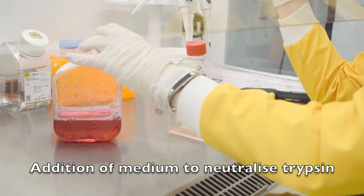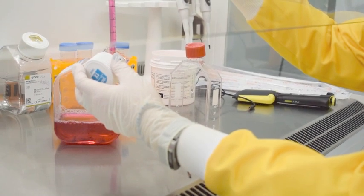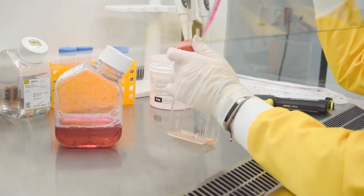A volume of fresh culture medium is added to the cell suspension. This helps neutralize the effects of trypsin, preventing over-trypsinization of cells.